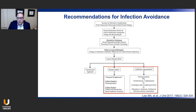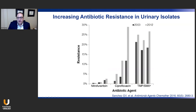The trouble with these two approaches is that they violate the principles of antibiotic stewardship. Over the last several decades, there has been a marked increase in the prevalence of antibiotic-resistant strains of bacteria. Data from 2003 to 2012 show significant increases in urinary isolates resistant to nitrofurantoin, ciprofloxacin, and Bactrim. So by continuing to give patients antibiotics, we are contributing to this problem.